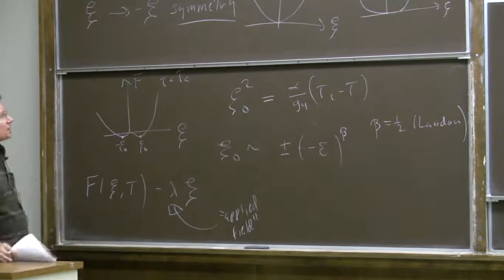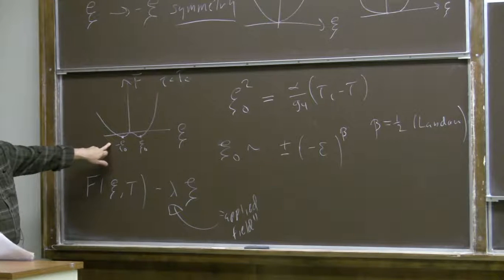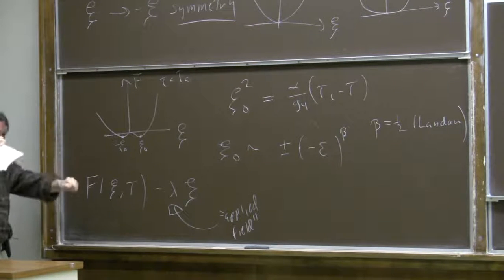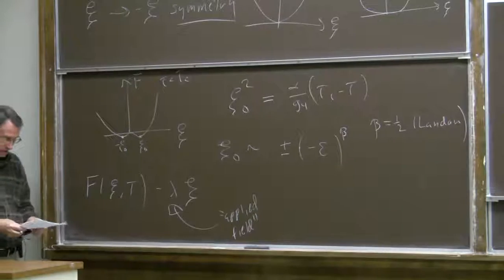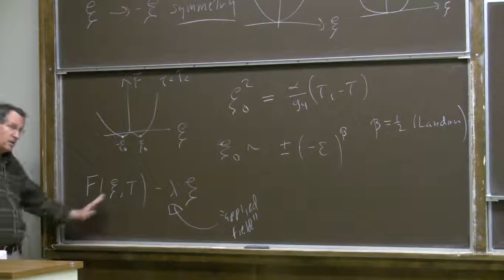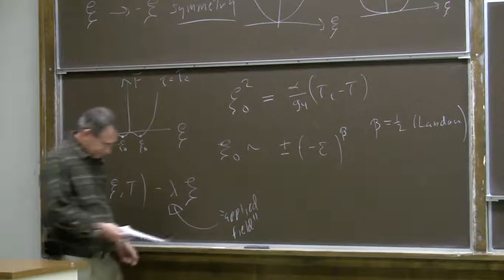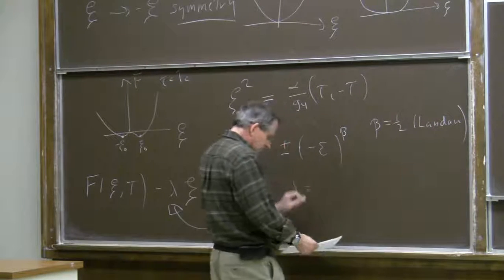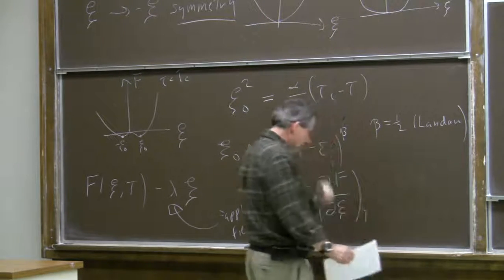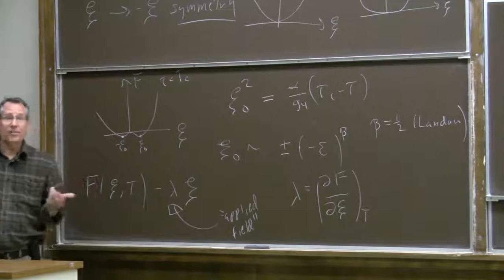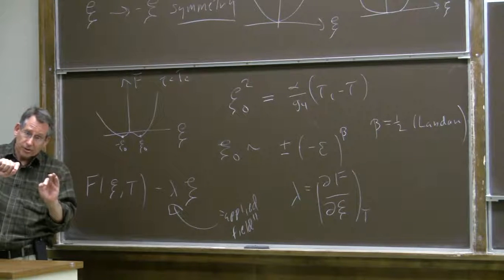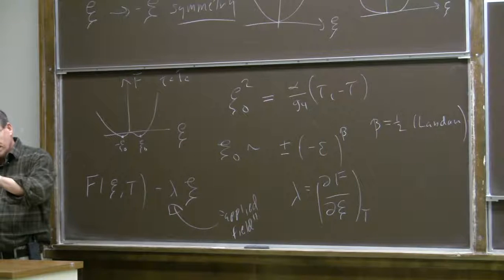That breaks the psi goes to minus psi symmetry so that when we're in the broken symmetry phase and psi zero is non-zero, one or the other of the two minima will be favored depending on the sign of lambda. When we fix the order parameter by minimizing this perturbed Helmholtz free energy, the external field is the derivative of the Helmholtz free energy with respect to the order parameter with temperature fixed. We can then consider the susceptibility, which tells us how the system responds when we're near the critical temperature and turn on an external field.